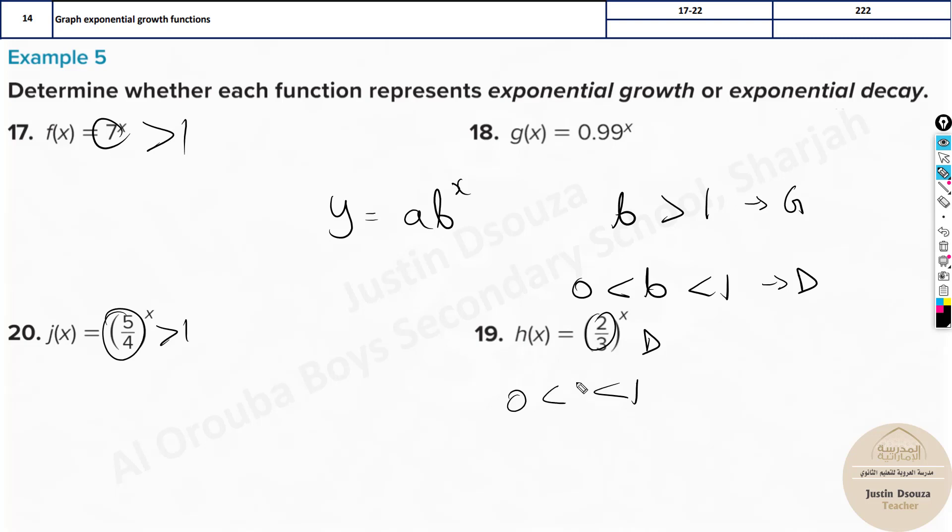Okay. Whatever is the base over here. And 0.999, it's again a decay function because it's less than 1. Even 0.1 less, it's still less. So this is the thing.